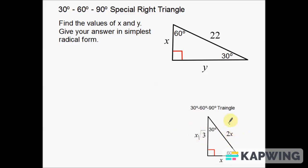If I'm going from the hypotenuse down to the shorter leg, I have to divide by two. Notice here — 2x and x. To get from 2x to x, I would have to divide by two. So if I want to get from the hypotenuse down to the shorter leg, I'm going to have to divide by two. But the first thing I have to identify is which one is my shorter leg.